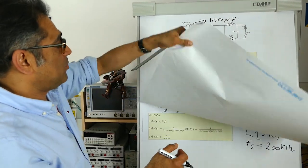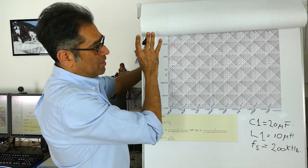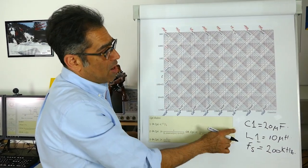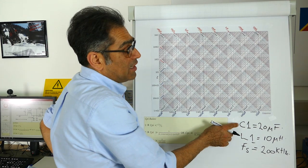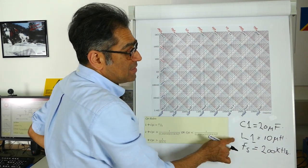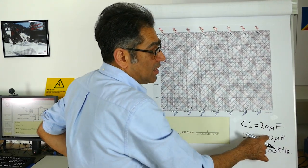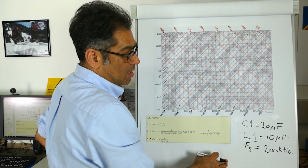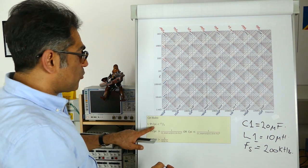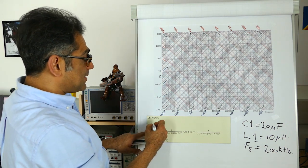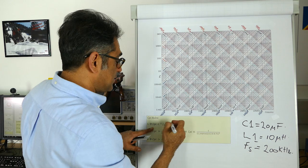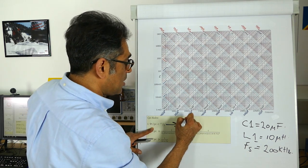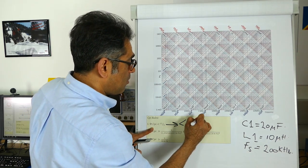So if I go down to my impedance paper, I have got the rules written down already. I know that my differential mode filter capacitor is 20 microfarads and its inductance is 10 microhenries and I know that the switching frequency is 200 kilohertz. So immediately from rule one, I know that Cpi must be one-fifth of this and therefore Cpi must be just smaller than 4 microfarads.